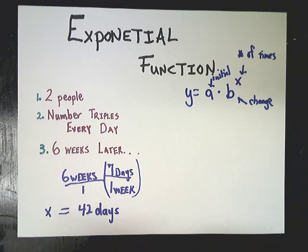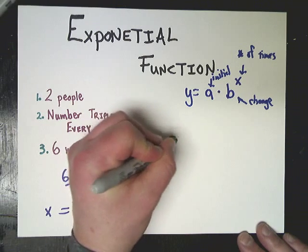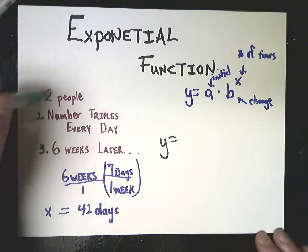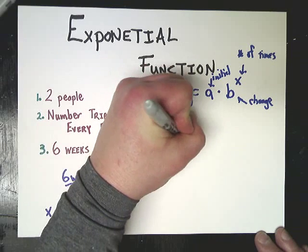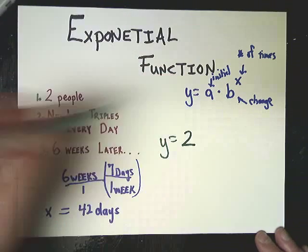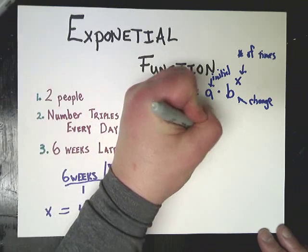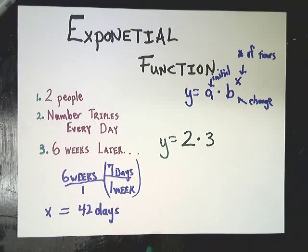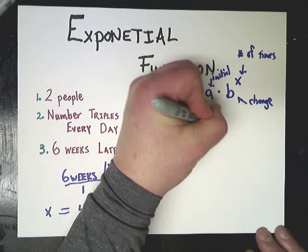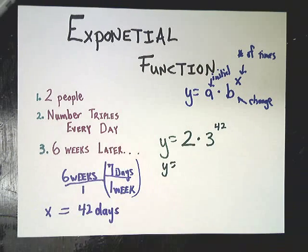And that would be my x value. That's my input up here. Now I have to think, well, okay, what about the rest of it? Well, y is my final amount. That's what I'm looking for. A would be my initial amount. I'm starting with 2 people. And the change component is that it triples every day. So that would mean times 3. And the number of days it's going to happen is 42 days.